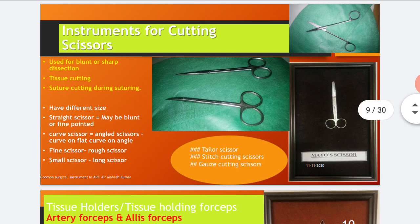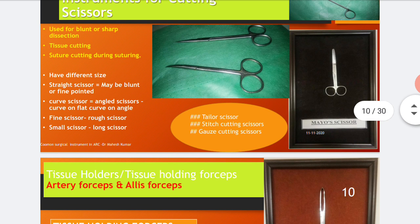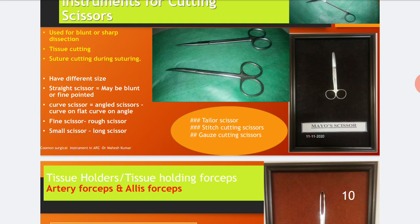Next are cutting scissors. Different types of scissors are used for blunt or sharp dissection, tissue cutting, and suture cutting during suturing. They come in different sizes and may be straight or curved. Straight scissors may be blunt or fine pointed; curved scissors may be angled or flat curved. There are also fine and rough scissors, small and long scissors. Three types also used in surgical units are stitch cutting scissors, gauze cutting scissors, and tailor scissors.